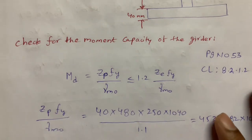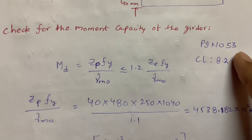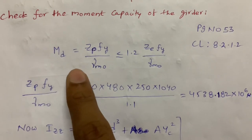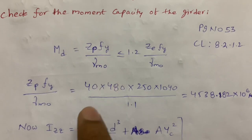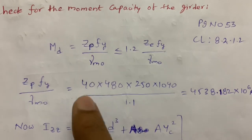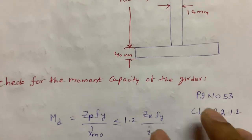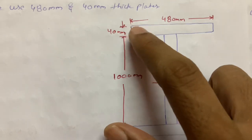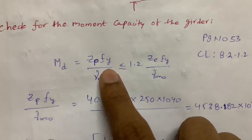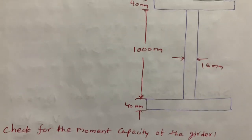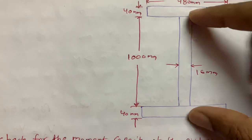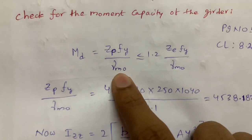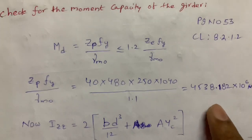Next, we calculate the moment capacity of the girder. Per IS 800:2007, clause 8.2.1.2, page 53: MD = ZP × Fy / γM0, where ZP is the plastic section modulus. ZP = 40 × 480 × (1040/2) / γM0. Here 1040 = 1000 + 40 (web + one flange), and γM0 = 1.1 from Table 5.